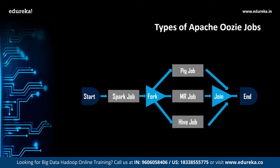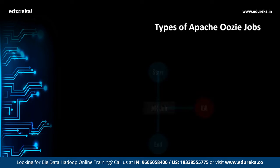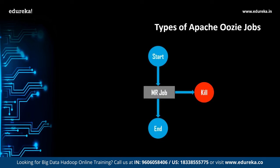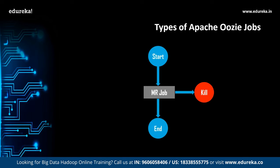The different components used in this particular job are: start, MapReduce job, Pig job, fork, join, Hive job, and finally end. Next are the nodes in the Oozie workflow. There are mainly three control flow nodes: start, end, and kill nodes. As you can see in the diagram, we have the start node first and the end node last. In between we have a MapReduce program based on word count. If the MapReduce job encounters an error, it will be terminated using the kill node; if successful, control flows to the end node.